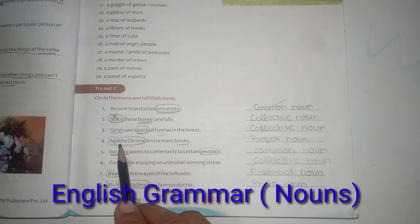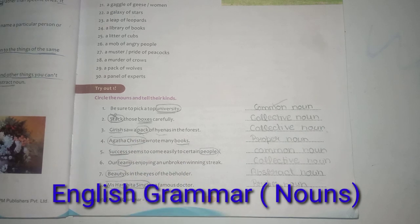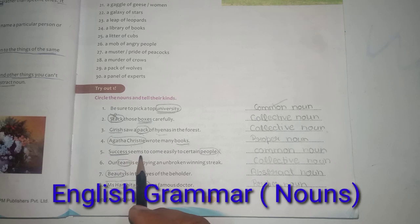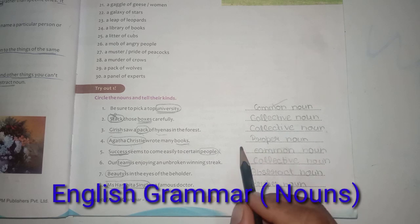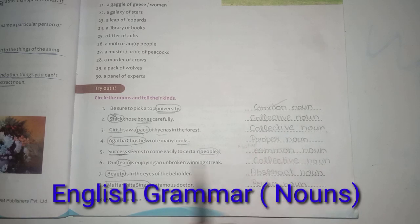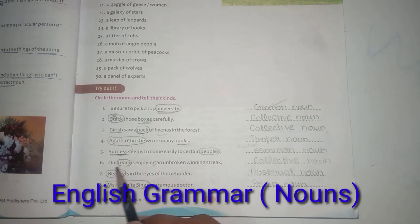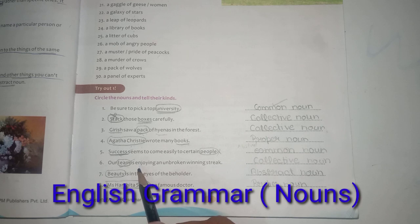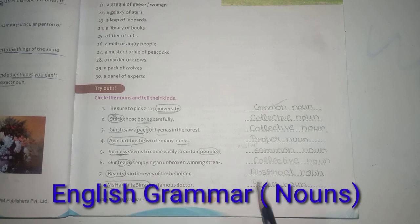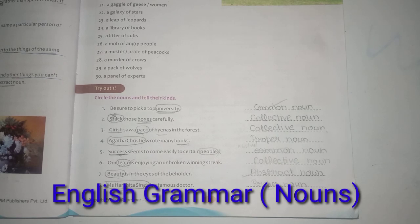'Agatha Christie wrote many books' — Agatha Christie is a proper noun. 'Success seems to come easily to certain people' — success is an abstract noun. 'Our team is enjoying the unbroken winning streak' — team is a collective noun. 'Beauty is in the eye of the beholder' — beauty is an abstract noun. 'Miss Harshita Singh is a famous doctor' — Harshita Singh is a proper noun.